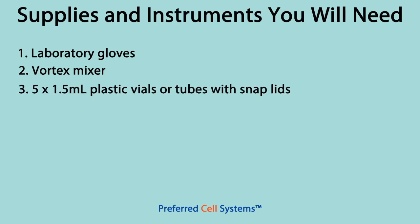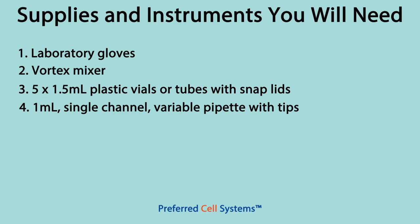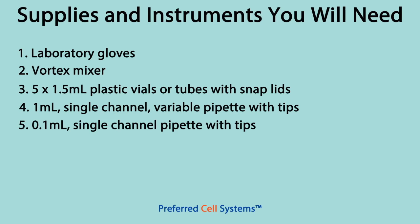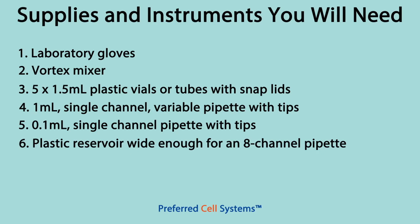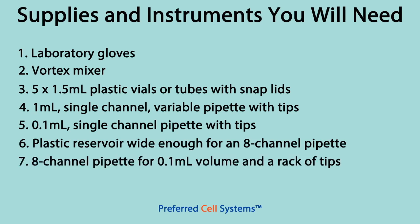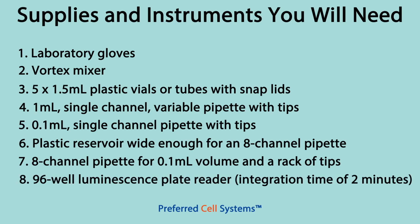Make sure you wear laboratory gloves at all times when performing this protocol, since ATP is present on the skin and can influence the results. Next, you'll need a vortex mixer, then five 1ml plastic vials or five 5ml tubes with snap lids, a 1ml single-channel variable pipette with tips, a 0.1ml single-channel pipette with tips, a plastic reagent reservoir wide enough for an 8-channel pipette, an 8-channel pipette capable of delivering 0.1ml, and a rack of tips. You'll also need the luminescence plate reader set with an integration time of 2ms. Make sure that the pipettes you use have been professionally calibrated. We recommend electronic pipettes, which are self-calibrating every time you use them; however, even these have to be professionally calibrated on a routine basis.